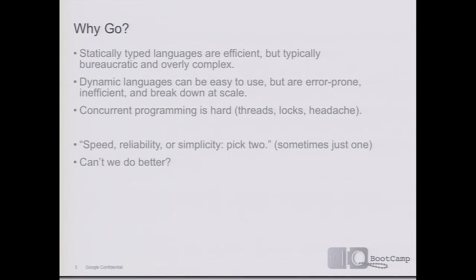I'll start with some background as to the origins of Go — the why and what. So why Go? It's a question I get asked pretty often. Why create a new programming language? We have so many — surely there's not a need for another one. Well, it was born basically out of frustration with the existing languages. The statically typed languages, the dominant ones like C++ and Java, tend to be very efficient when they compile and run, and they give you a lot of control, but they're typically very bureaucratic. They can be very verbose and also overly complex. It can be difficult to understand exactly how the code that you've written will behave.